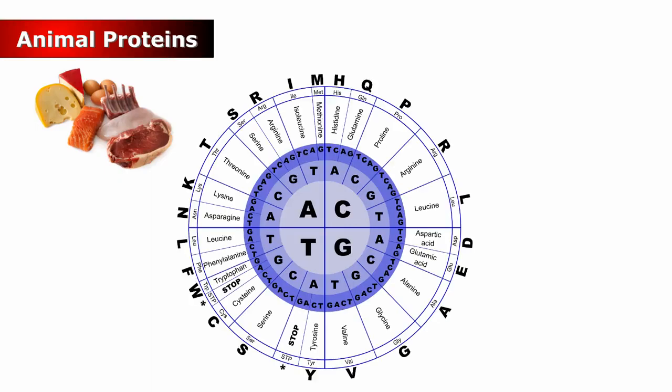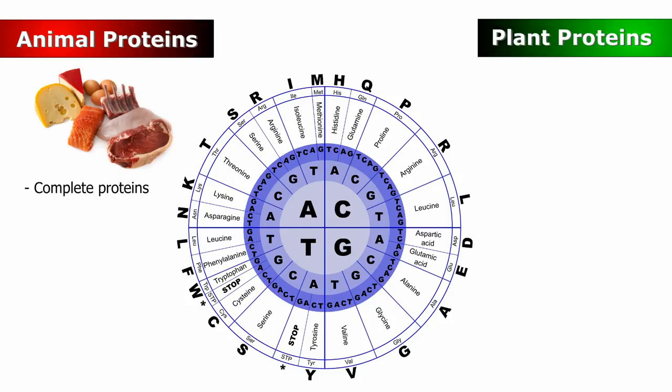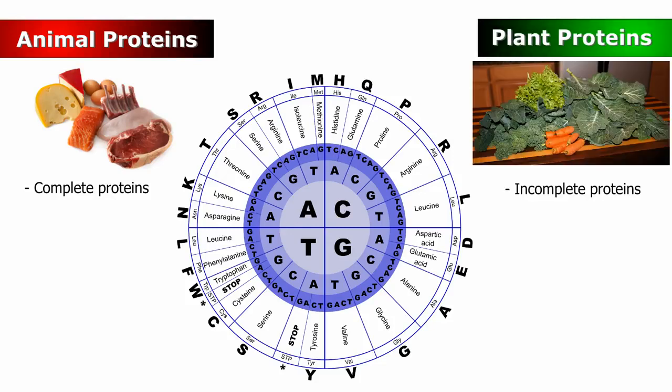Animal protein molecules contain repeated use of all 20 amino acids and are complete proteins. Most plant proteins are incomplete because not all 20 amino acids are used in building each type of plant protein molecule.